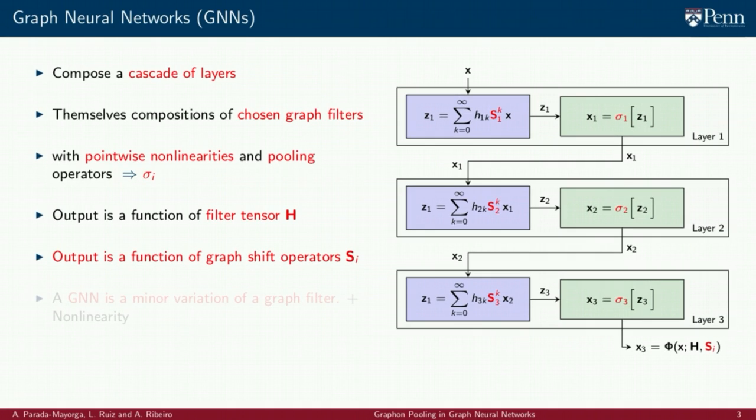And the output is also a function of the shift operators s sub i associated to each layer of the GNN. It is worth pointing out that GNNs can be considered as a variation of graph filters where a non-linearity function sigma is added.